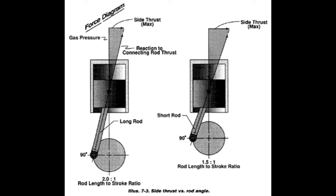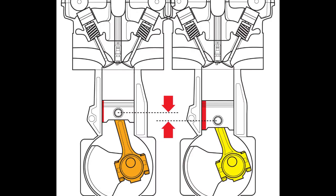I emphasize though that having a longer rod stroke ratio also provides a longer dwell at around top dead center. Conversely, a shorter rod stroke ratio of maybe 1.5 would not really be suitable to higher RPMs and would make less top-end power overall.